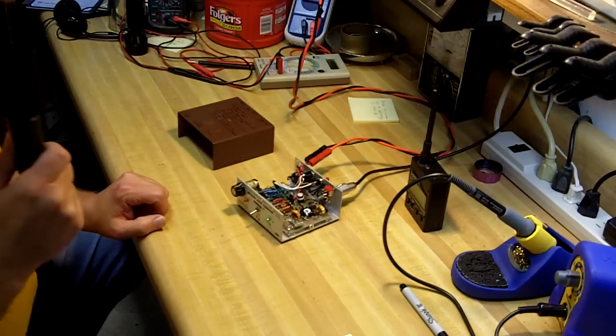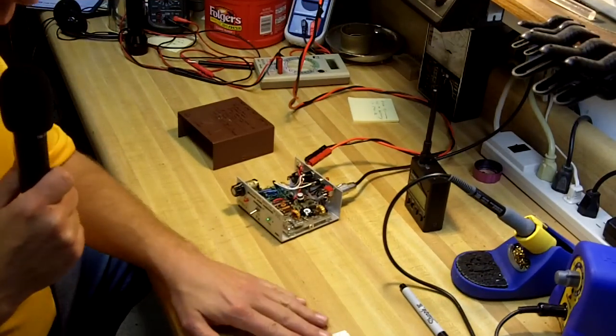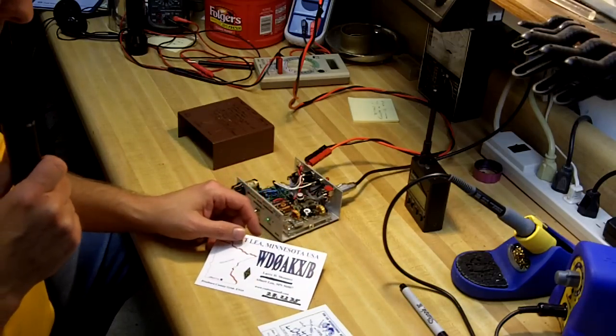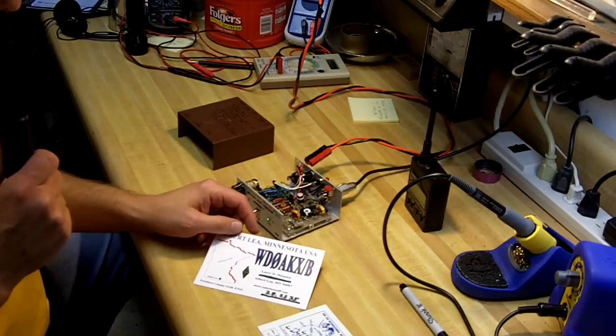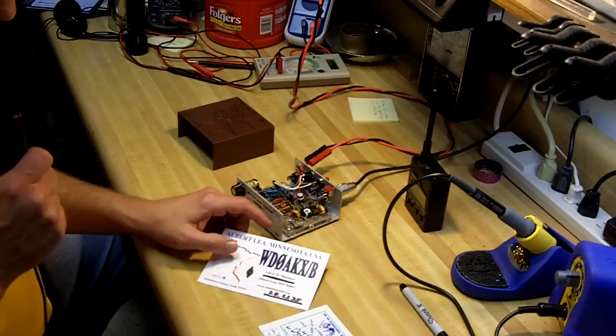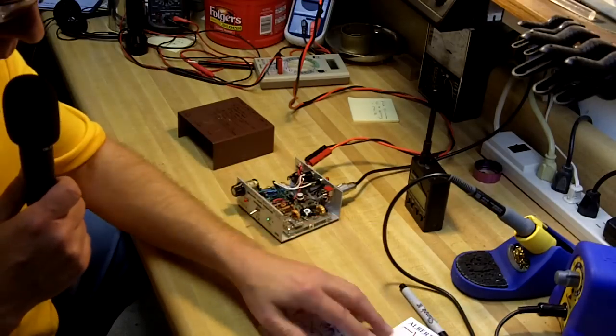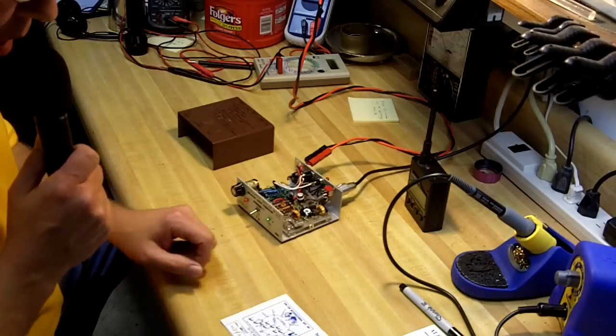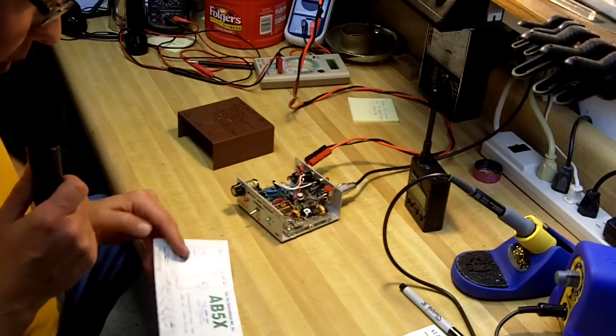I do send out QSL cards if you copy the beacon on 10 meters. They look like this. And the frequency again is 28.2235 megahertz. And I'm in Albert Lee, Minnesota. So if you hear the beacon, either send me a QSL reception report or an email or something and I do QSL.